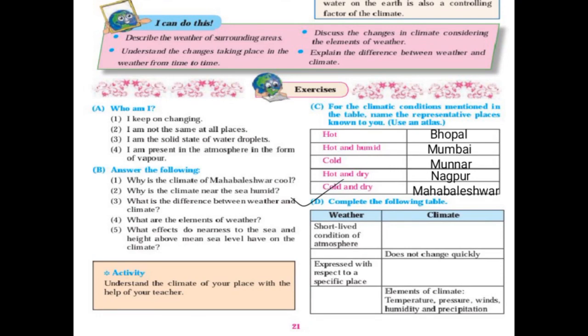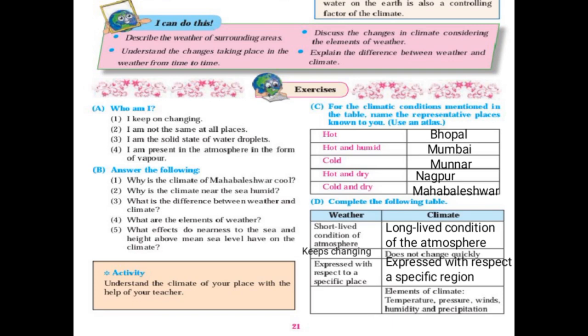Complete the following table. Weather: short-lived conditions of the atmosphere. Climate: long-lived condition of the atmosphere. Weather keeps changing; climate does not change quickly. Weather is expressed with respect to a specific place; climate is expressed with respect to a specific region.